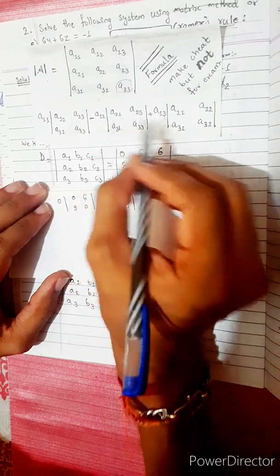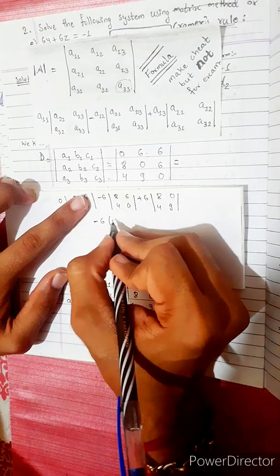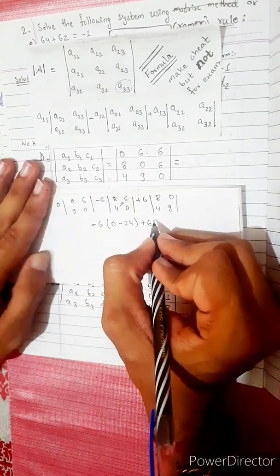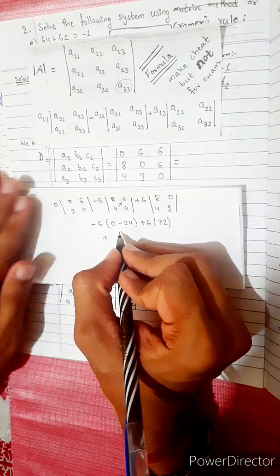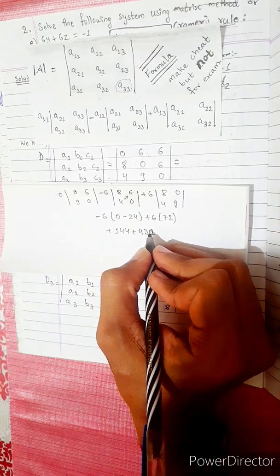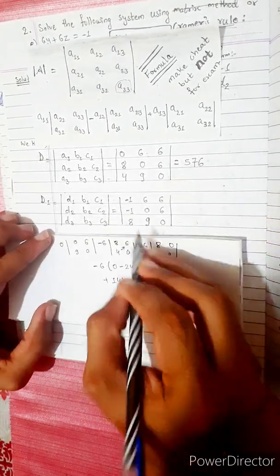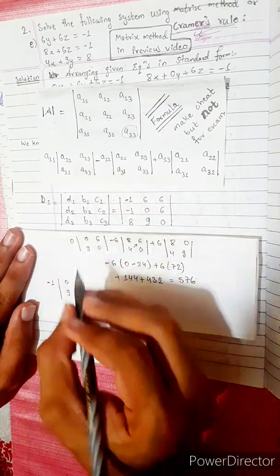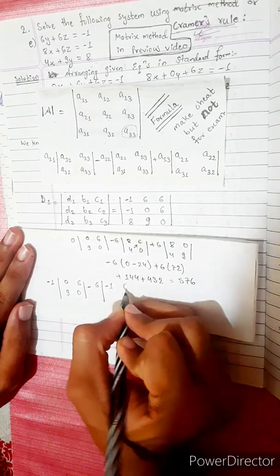Computing D: 8 into 0 minus 6, then 4 into 8 into 0 minus 6, giving 24. Plus 6 times 72, minus 4 into zeros. Then 44 into 6 is 144 plus 6 into 72 is 432.